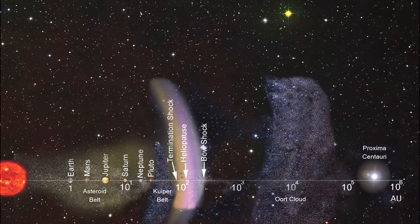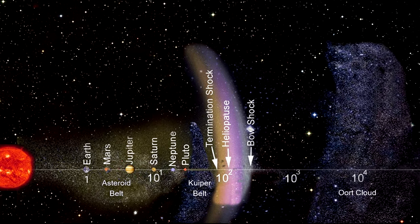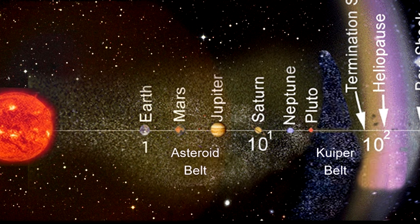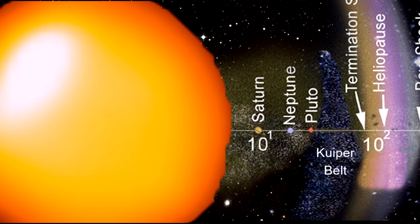It is also one of the largest and most luminous stars known. If it were at the center of the solar system, its surface would extend past the orbit of Jupiter.